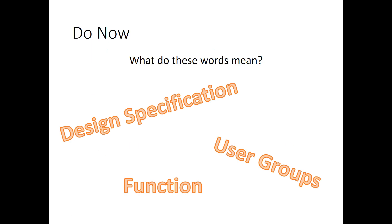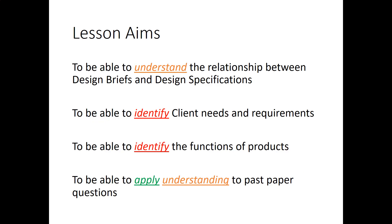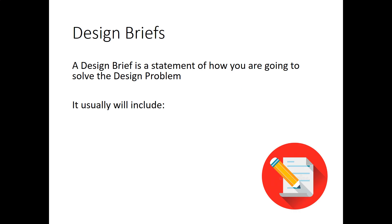What do these words mean? Design spec, user groups, and function. The spec is specific points about your design. User groups may inform the spec, and the function is what the product does. Today's aims: to understand the relationship between design briefs and specifications, to identify client needs and requirements, to identify the functions of products, and to apply understanding to past paper questions. So what is a design brief? It's a statement of how you are going to solve a design problem.